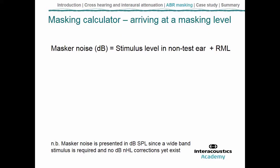With this information in mind, let's move on to thinking about some of the procedures for how to implement this. We now know how to set the masker noise up to completely mask the stimulus as it might have crossed over in the ABR. To set the masker noise level in SPL, we note the sound level in the non-test ear and then add on the relevant relative masker level for the type of stimulus we're using.